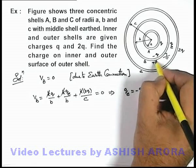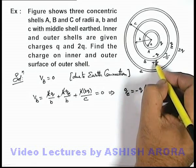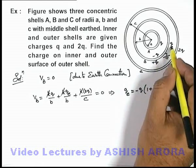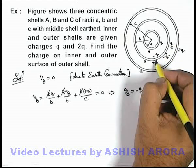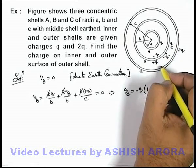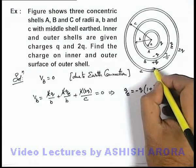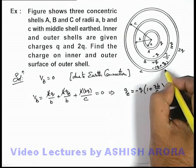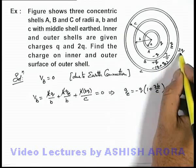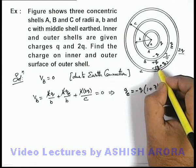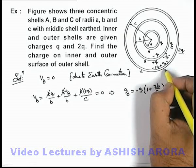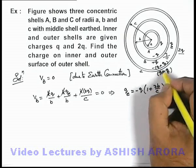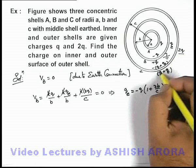An equal and opposite charge of +q is induced on the outer surface of shell B, so the total charge on the outer surface of shell B is qe + q. The total flux from this will terminate on the inner surface of shell C, so the charge on the inner surface of shell C is −(q + qe). On the outer surface of shell C, the original 2q was already present, and (q + qe) is induced, giving a total of 3q + qe.